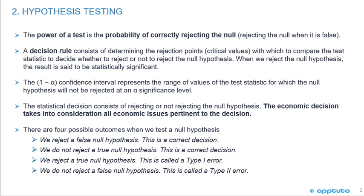The confidence interval represents the range of values of the test statistic for which the null hypothesis will not be rejected at a significance level. The statistical decision consists of rejecting or not rejecting the null hypothesis. The economic decision takes into consideration all economic issues pertinent to the decision.